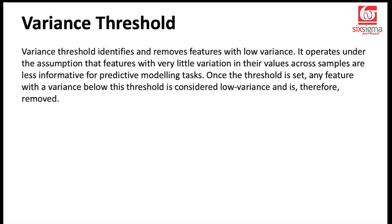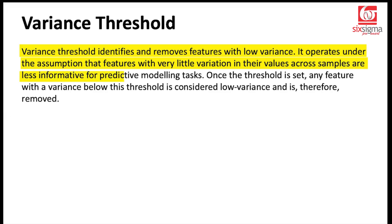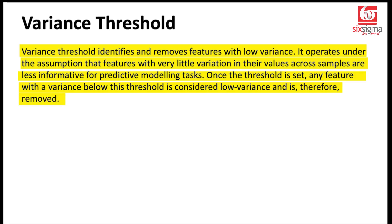The variance threshold works on the logic that if the independent variable shows a constant behavior against the target, then it is not a good independent variable and may be eliminated. Variance threshold identifies and removes features with low variance. It operates under the assumption that features with very little variation in their values across samples are less informative for predictive modeling tasks. Once a threshold is set, any feature with a variance below this threshold is removed.